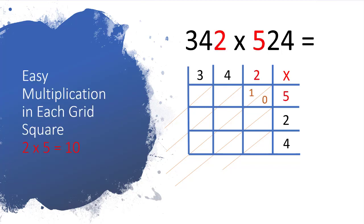Then this is now as simple as doing some easy multiplications across the grid. So the first one you see, it's 2 at the top multiplied by 5 at the side. The answer to 2 times 5 is 10, so you always put your tens in the top half of the diagonal and your units in the bottom half of the diagonal. So the answer 10 goes in there.